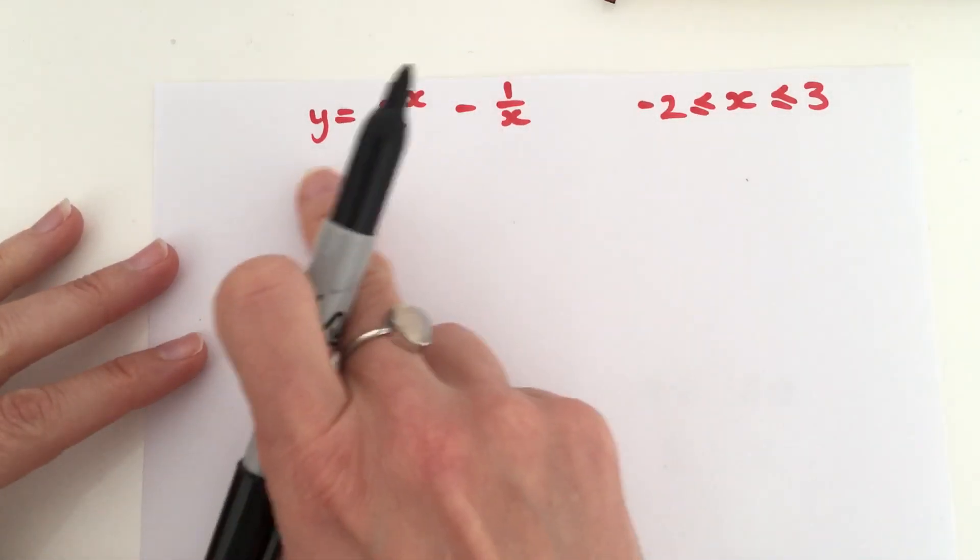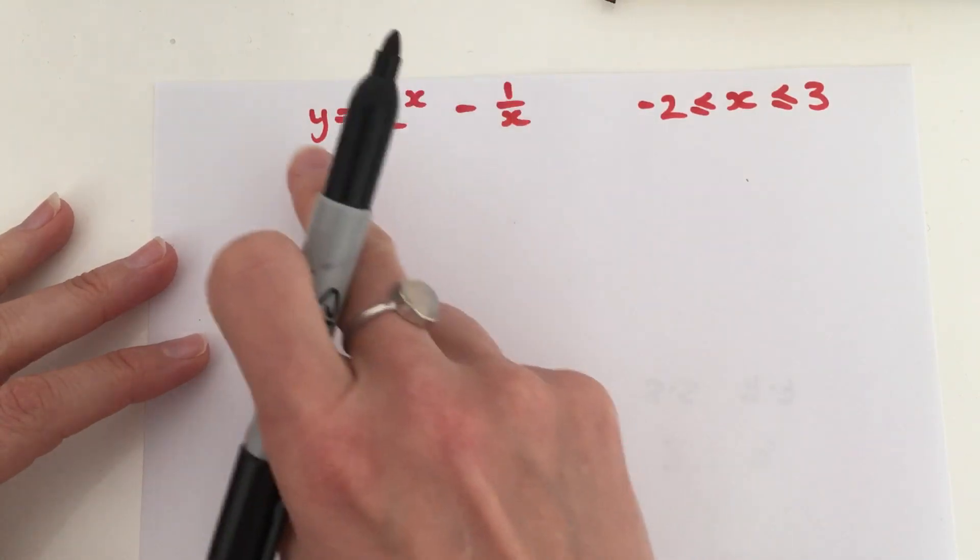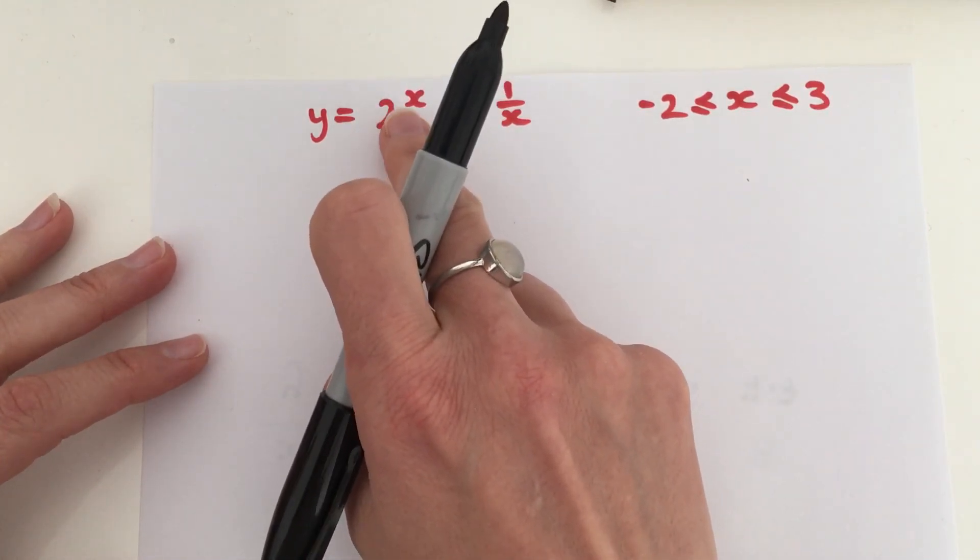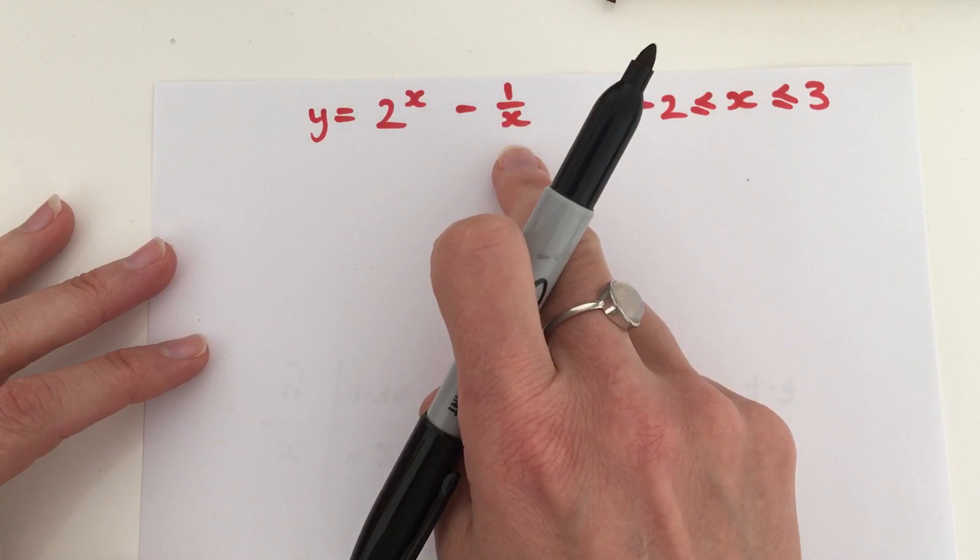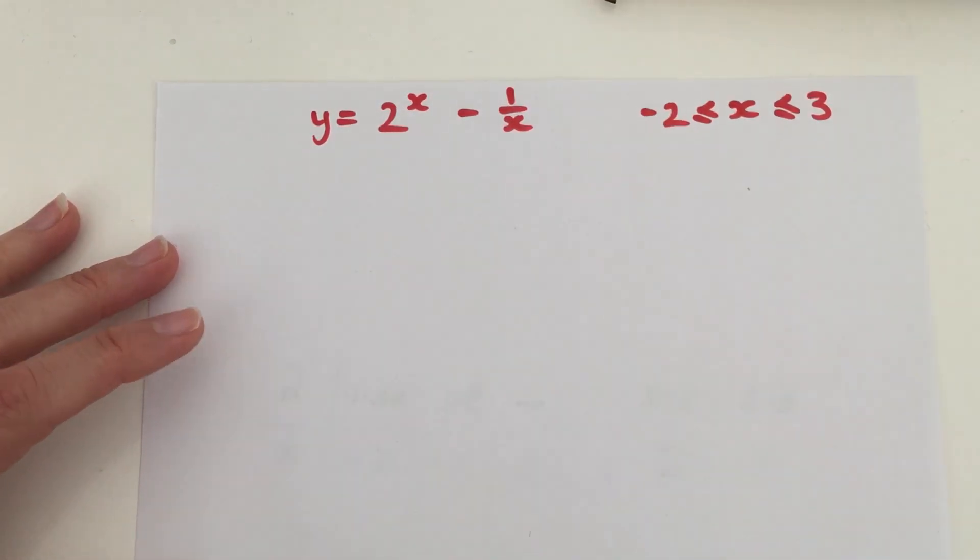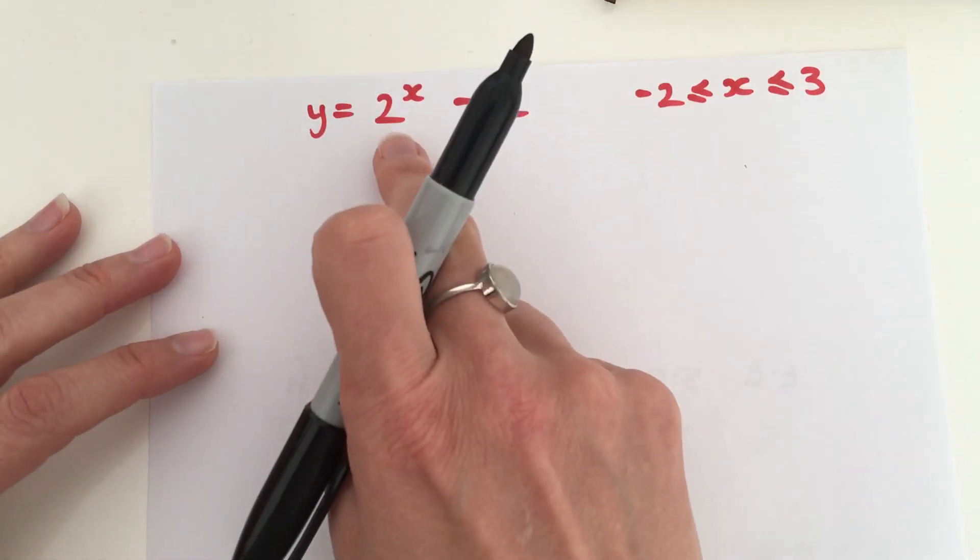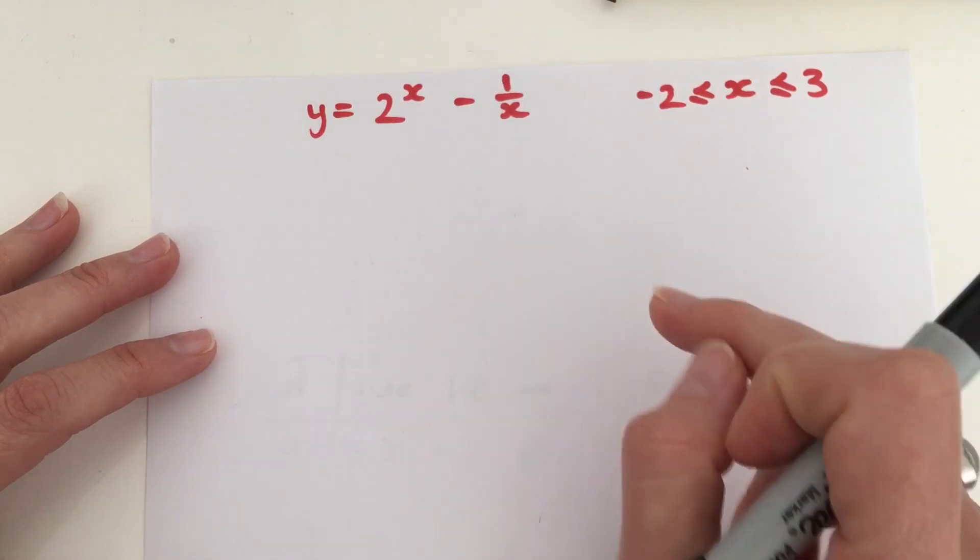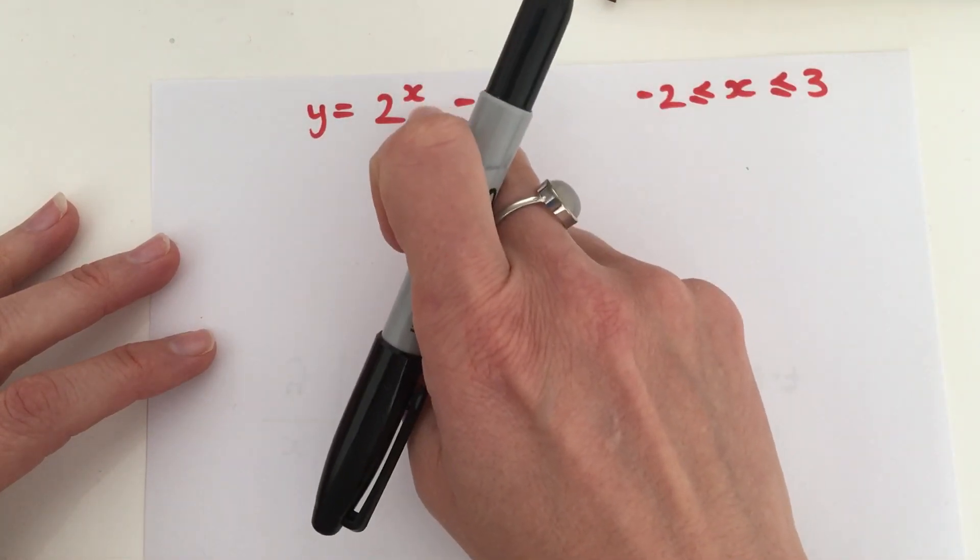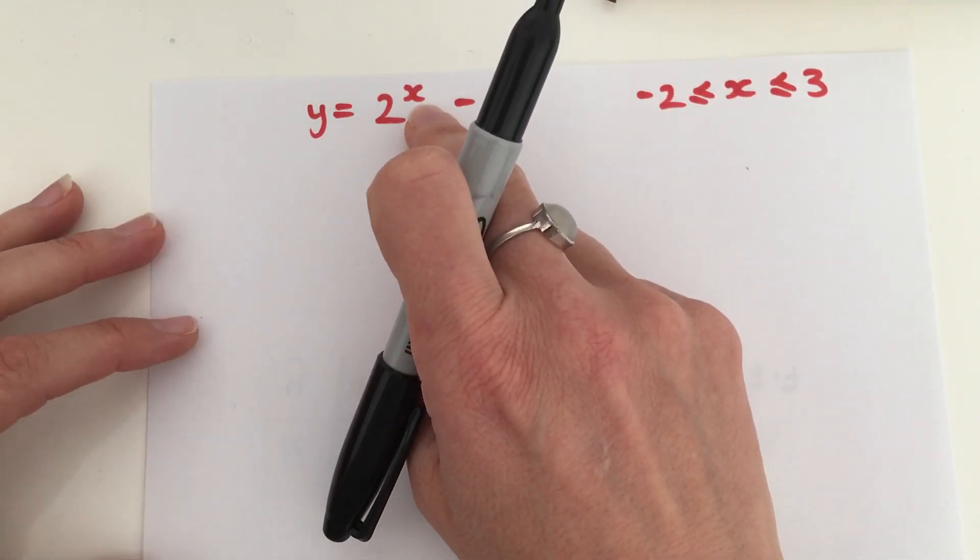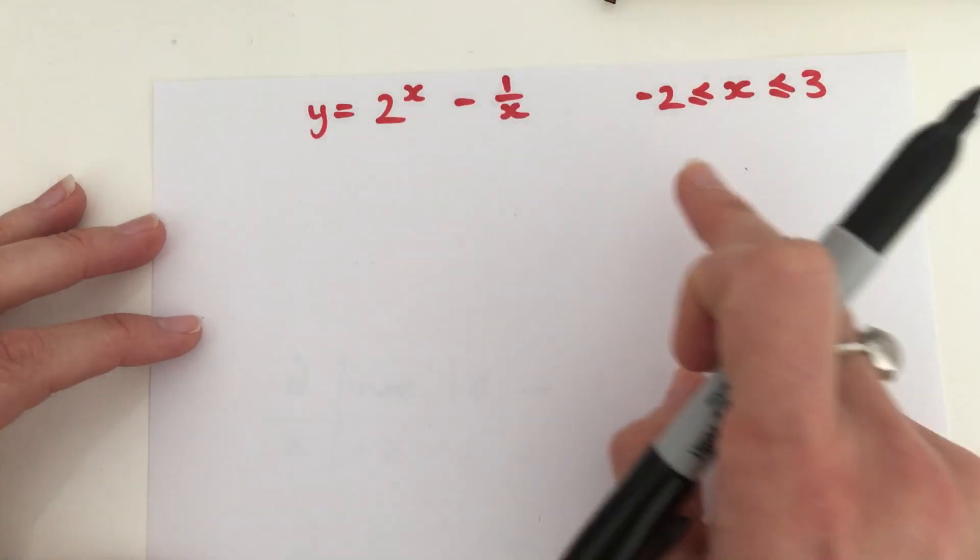If we were given quite a complex equation like y equals 2 to the power x minus 1 over x, then we've got a combination of two graphs in one here. We've got what we call an exponential graph, where the power is the x value, whatever the x value takes.